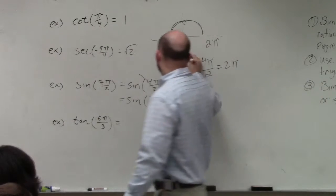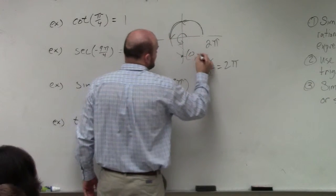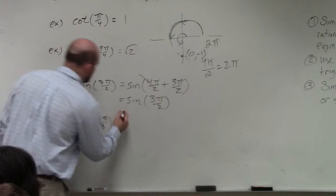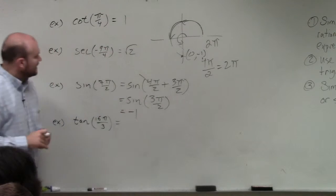So here's our coordinate point. My coordinate point is 0, negative 1. We're identifying the sine, which is going to equal negative 1.